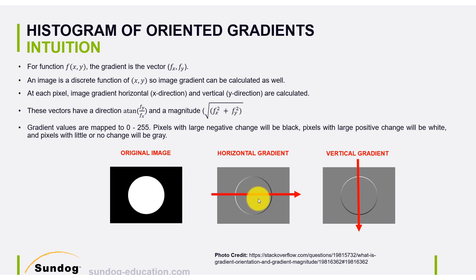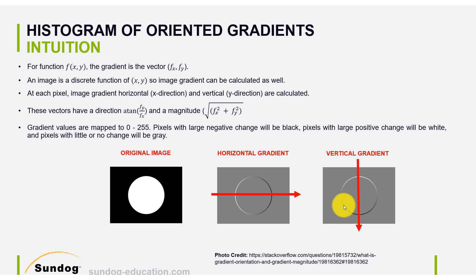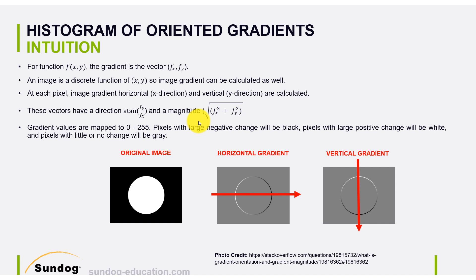Let's do the exact same thing but for a vertical gradient, going from top to bottom. You'll see white because you're going from black to white, and then from white to black you get a negative gradient shown as black values. That's how you take your original image, calculate the horizontal gradient and the vertical gradient — these are the first basic foundations of HOG features.